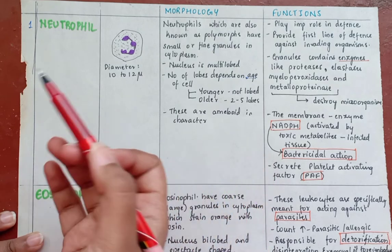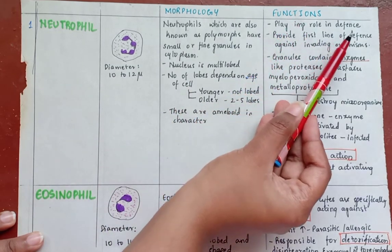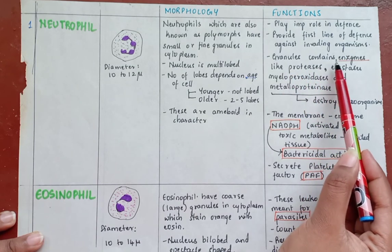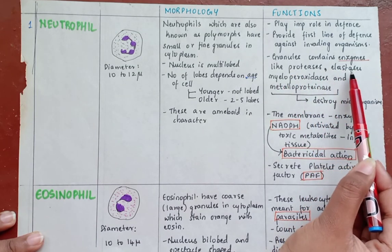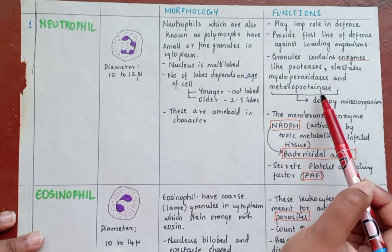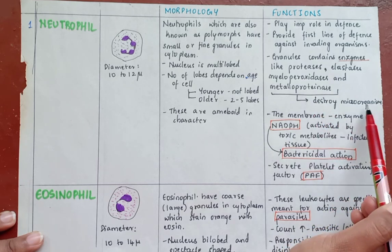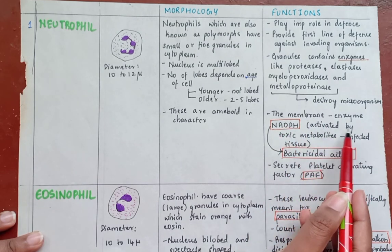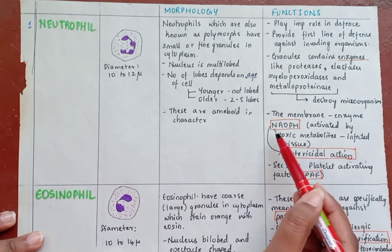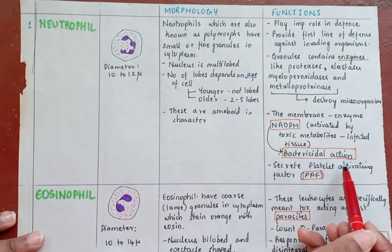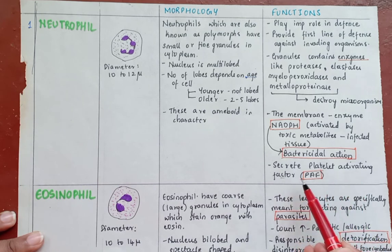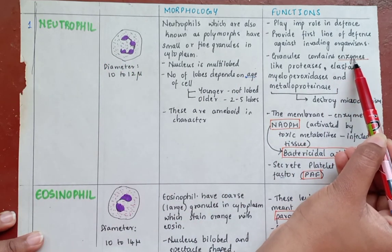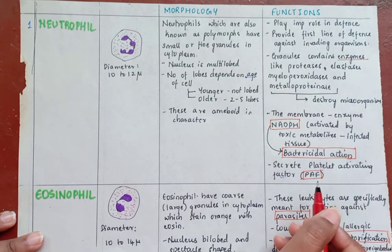All leukocytes play an important role in defense, and neutrophils also play an important role in defense. These provide the first line of defense against invading organisms. The granules contain enzymes like proteases, lactases, myeloperoxidases, and metalloproteinase, which destroy invading microorganisms. The membrane enzyme NADPH is activated by toxic metabolites from infected tissue, causing bactericidal action. Neutrophils also secrete platelet activating factor. The granules containing these enzymes give neutrophils their bactericidal action.